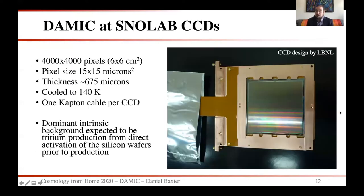The CCDs themselves were designed by LBNL. They are 4000 by 4000 pixels, or six by six centimeters squared, with a pixel size of 15 by 15 microns and a thickness of 675 microns. They are cooled to approximately 140 Kelvin, with one Kapton cable reading out each CCD. The dominant intrinsic background in the CCDs is expected to be tritium production from direct activation of the silicon wafers prior to production.